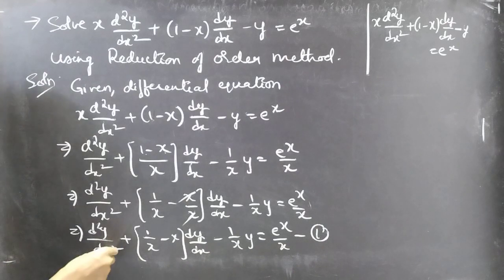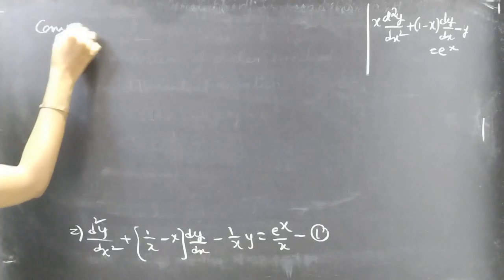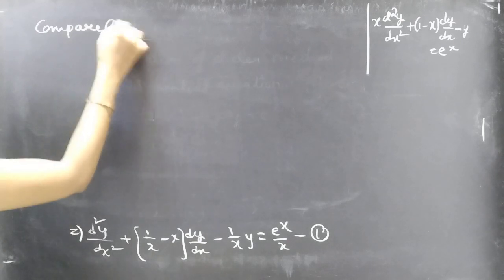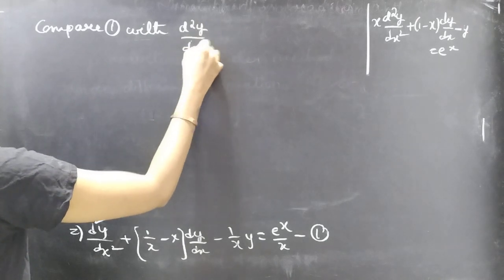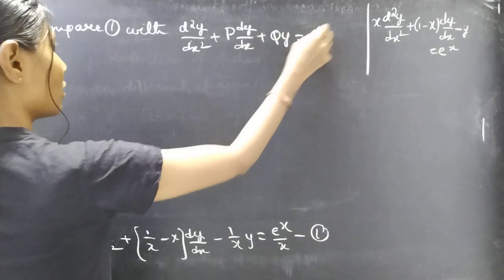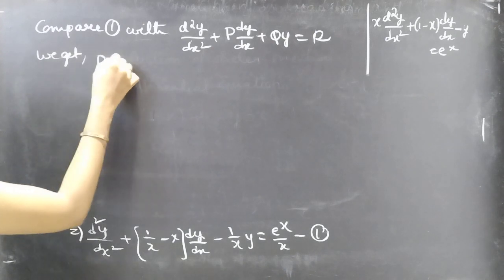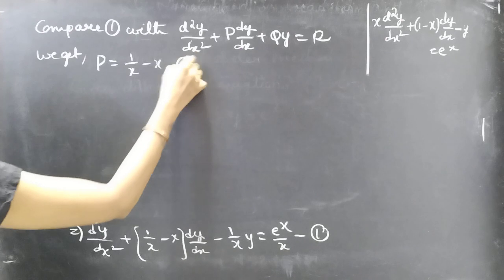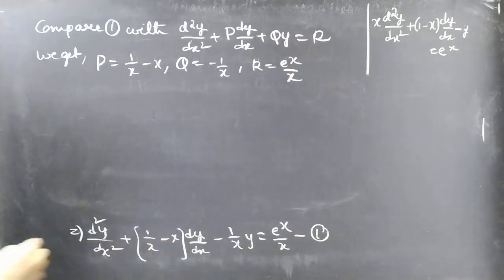Now compare equation 1 with the standard form d²y/dx² + P·(dy/dx) + Q·y = R. By comparing, we get P = 1/x − 1, Q = −1/x, and R = e^x / x.